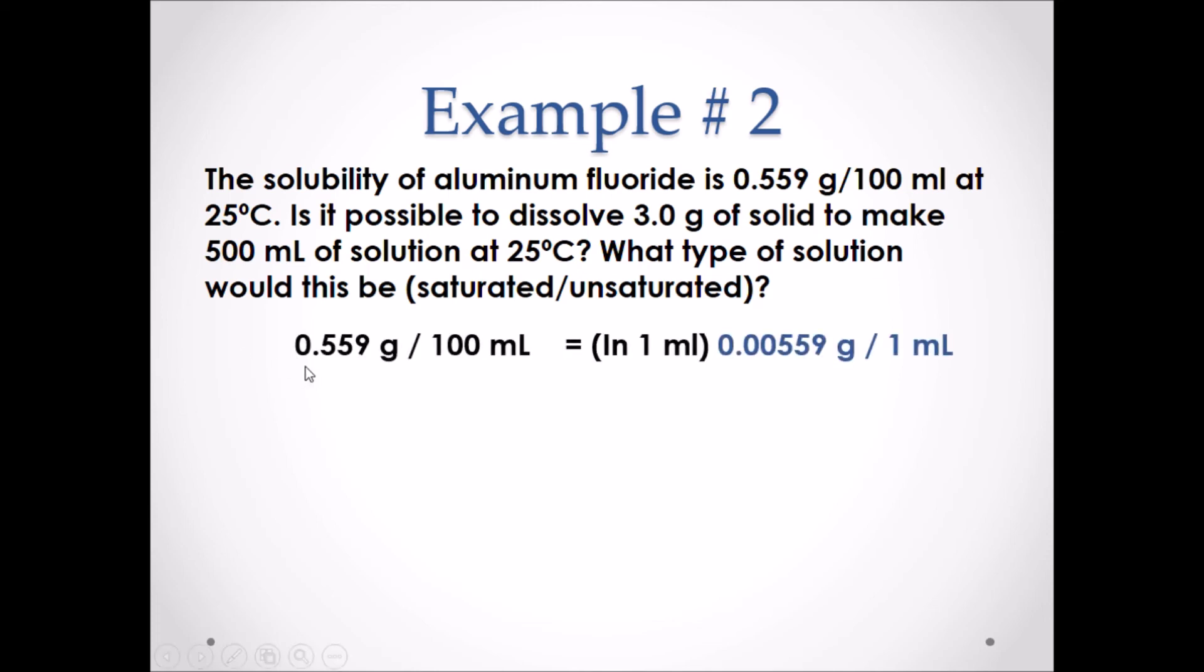We know that the solution can hold 0.559 grams per 100 mL. If we were to divide this value by 100, we would be left with 0.00559 grams of aluminum fluoride can dissolve in 1 mL. We can then take the solution, which has 3.0 grams of aluminum fluoride per 500 mL and we can get a value of 0.006 grams per 1 mL. As a result, this value is larger than the actual amount of aluminum fluoride that can be dissolved.